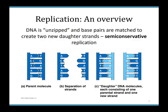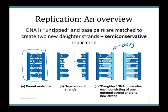What actually happens where we're laying down the daughter strand? Here's a schematic: we break the hydrogen bonds between the nitrogenous bases of the parent molecule — T-A has two hydrogen bonds, G-C has three, so T-A is a little easier to break. Once we've unzipped those strands, we match up daughter nucleotides using complementary base pairing: if there's an A on the parent, there has to be a T on the daughter; if there's a C, there has to be a G.